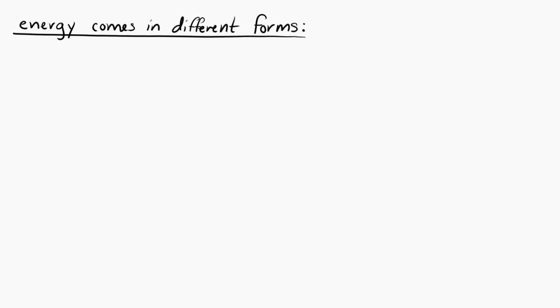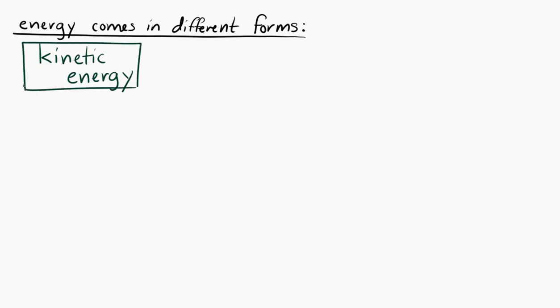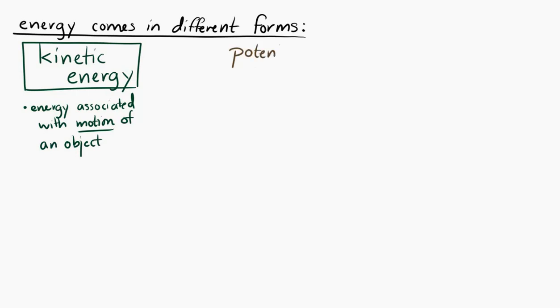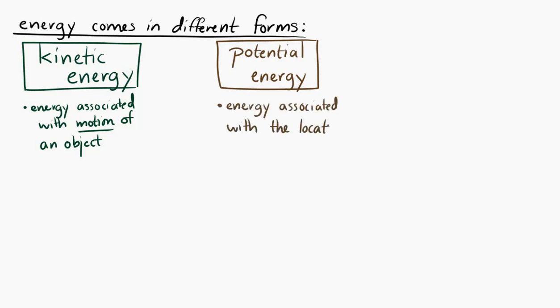When we talk about energy, we usually talk about it coming in different forms, or types, or categories, or kinds. We're going to split energy into three major categories, and then there will be categories within those. One of the major categories is kinetic energy — the energy associated with the motion of an object. Another big category is potential energy, which is the energy associated with the locations and arrangements of objects. It's often referred to as stored energy.